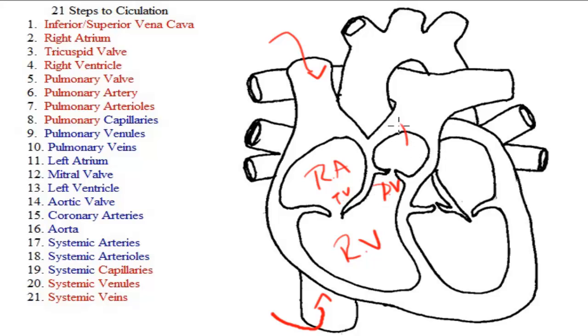So the blood comes into the right atrium, through the tricuspid valve, into the right ventricle, through the pulmonary valve and into the pulmonary artery. And from the pulmonary artery, what we do is get blood into the capillaries so that we can oxygenate it, but a capillary is way too small to connect to an artery.